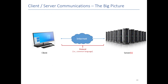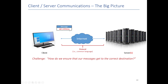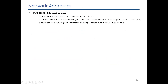Now we have a common protocol, so let's assume that the client and the server know how to send messages to each other in a way they can understand. How do we ensure that our message actually gets to the correct computer? There are literally billions of computers on the internet — so how do I talk to that one specific machine? The answer is that we need some sort of way to address a computer, to assign it a unique identity. That's where IP addresses come in. An IP address basically represents your computer's unique location on the internet. When you connect to a network, you are given an IP address. Your IP address can be either public — where other computers on the internet can see it — or private, where only computers inside your network can see it.